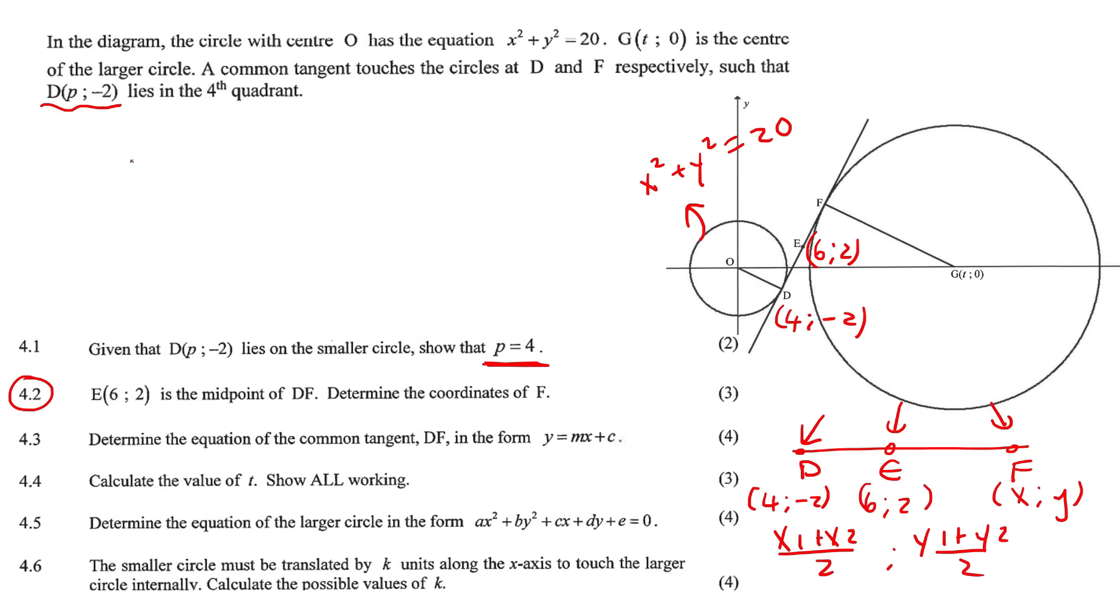We know that with the midpoint theorem, you normally use this information and this information to find this one. So you would normally say x1 plus x2 over 2, and y1 plus y2 over 2. Now we can do that again. But you would say, for example, point D, let's let that be point 1, and then let's let point F be number 2. So you would say 4 add x over 2, but we know the answer. We know that the x value midpoint is 6, so we can make it equal to 6. And then for the y, we can say minus 2 plus y over 2, and we know the y answer must be 2.